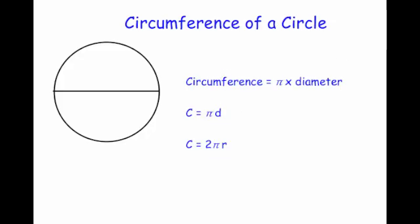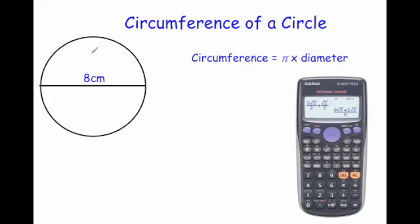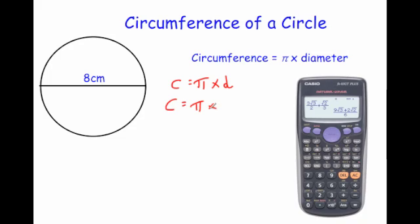Let's have a look at a typical question. Here we've got a circle with a diameter of 8 centimetres, and we've been asked to calculate the circumference. To do that, you first write down the formula: circumference equals pi times diameter. So the circumference equals pi times 8.